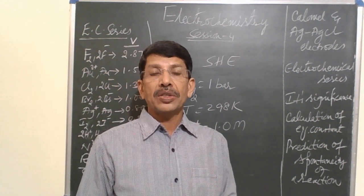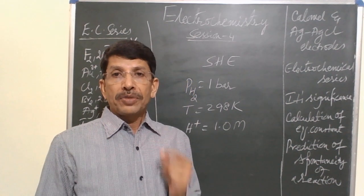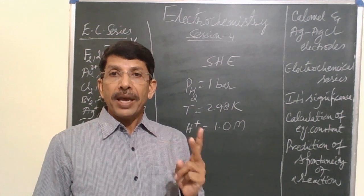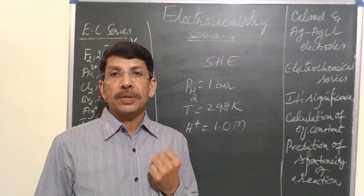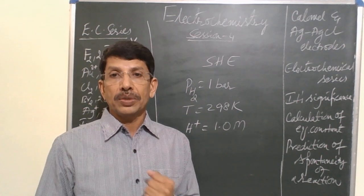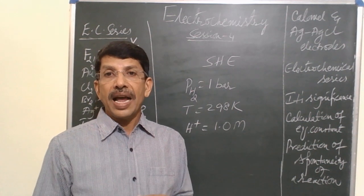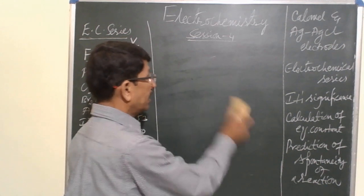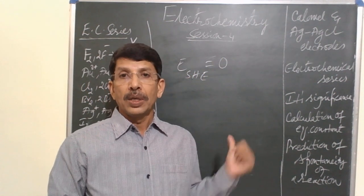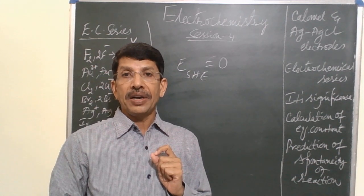The standard hydrogen electrode is used to measure the potentials of all other electrodes. Single electrodes have no significance; only when you have a pair of electrodes is it possible to construct a cell and obtain some work. In order to determine any electrode potential we require another electrode whose potential is known. Therefore, scientists considered the standard hydrogen electrode as a reference electrode and its potential is assumed to be zero.